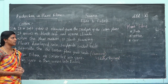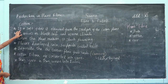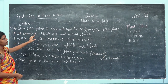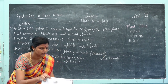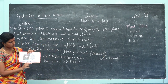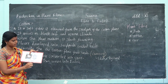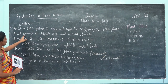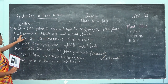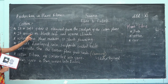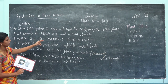Next we see about production of cotton fiber. Cotton is a soft fiber. It is obtained from the seed part of the cotton plant. Cotton fibers are very soft. It grows in black soil and warm climate. When the plants mature, it starts flowering.